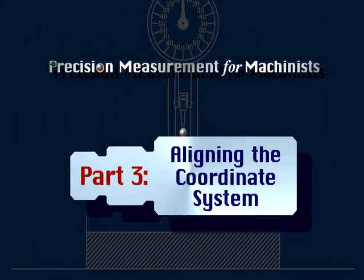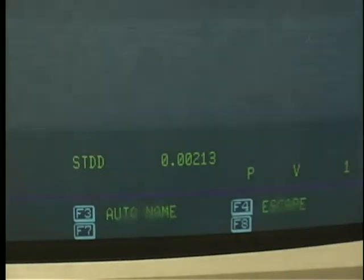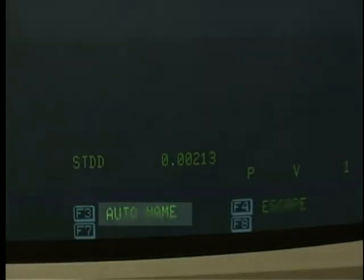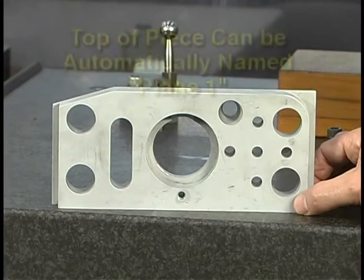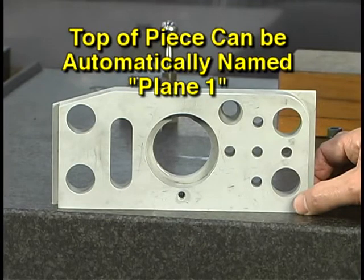Part 3: Aligning the Grid System. During the process of measuring, the computer can be used to automatically name measured features. For example, if a plane is measured, it can be automatically named plane 1 and stored in the computer for future reference.